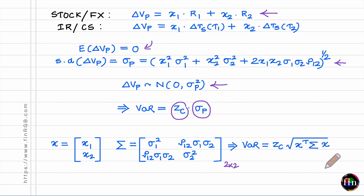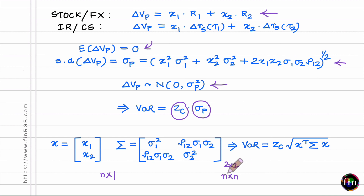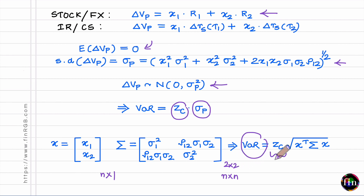This matrix formula extends easily to n risk factors: X becomes an n×1 column vector, Σ becomes an n×n variance-covariance matrix, and σp = sqrt(Xᵀ · Σ · X). The VaR is then the appropriate z-value (at the chosen confidence level) multiplied by σp. This concludes the presentation of a basic model for calculating multi-factor VaR, and the final formula is: VaR = z · sqrt(Xᵀ Σ X).